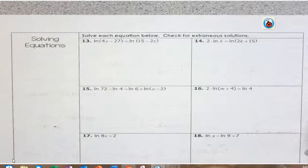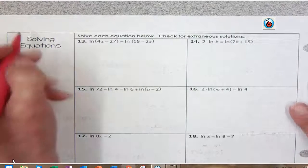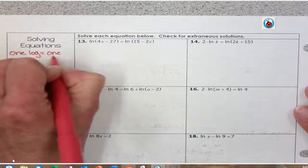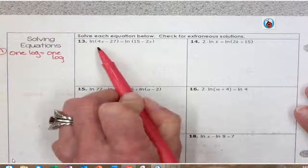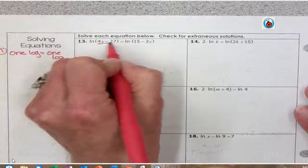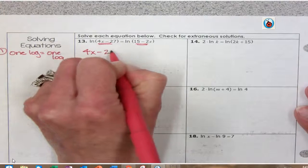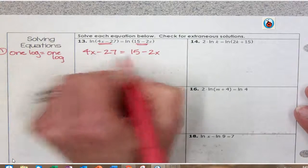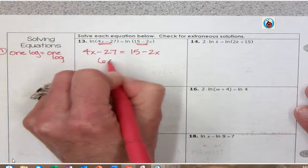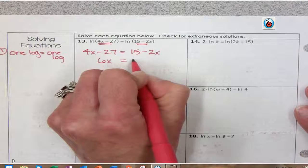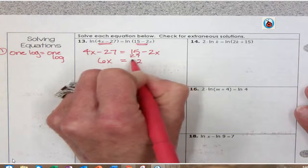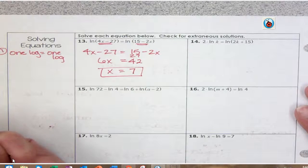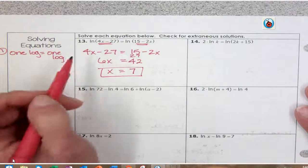So we've got three types of problems that we need to solve, and you need to be familiar with solving all three types. One is where you have one log equal to one log. These are the easiest types of problems. When you have one log equal to another log, then you just set the logarithms equal to each other. So this would be 4x minus 27 equals 15 minus 2x. They're both logarithms, so they have to equal each other. Then I just solve: add 2x to both sides, add 27 to both sides, and you get 42 divide by 6, x equals 7.